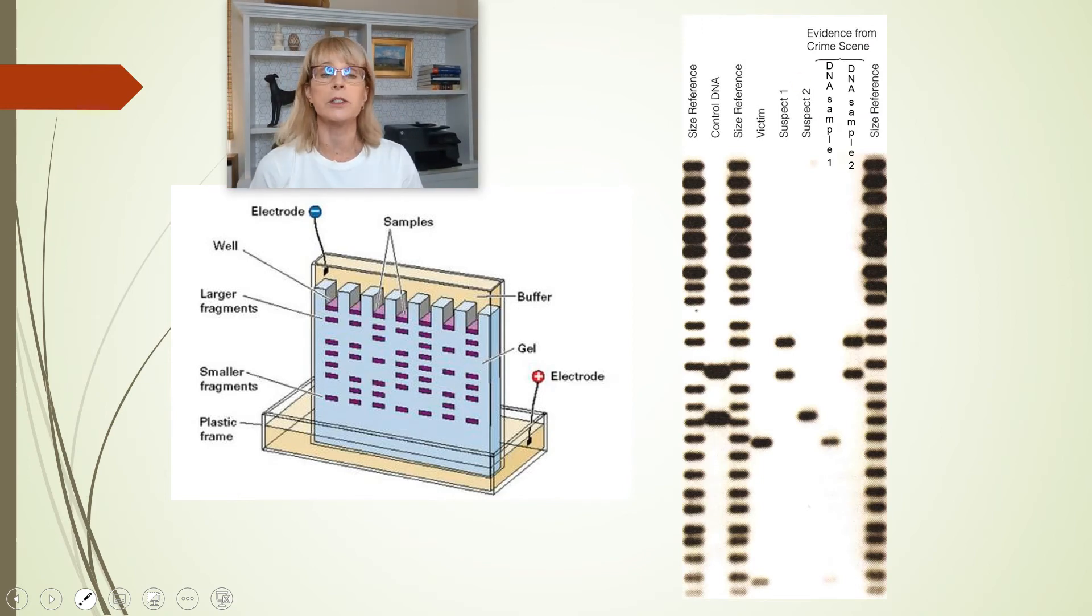What we do know just from one test is that neither of these DNA samples came from suspect number two. So if the only reason suspect number two was being held in custody, suspect number two would be free to go because we know with certainty that neither of the DNA samples from the crime scene came from suspect number two.